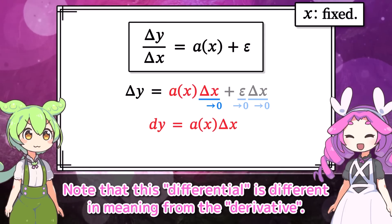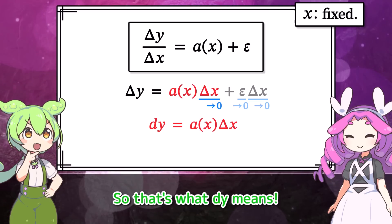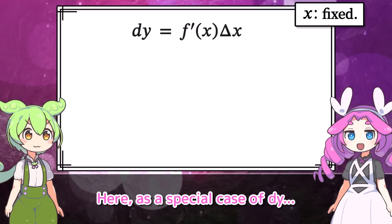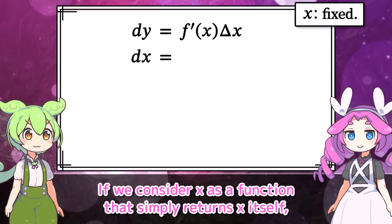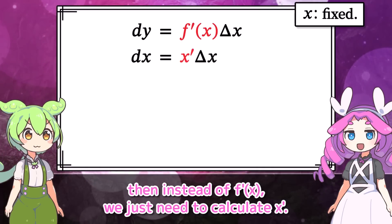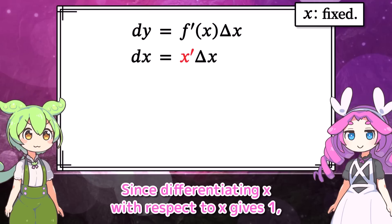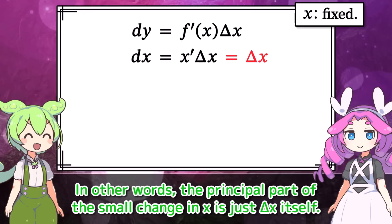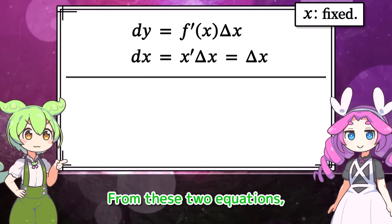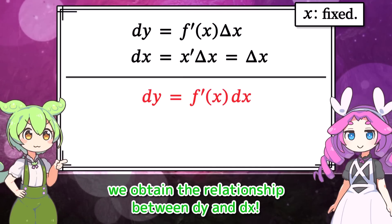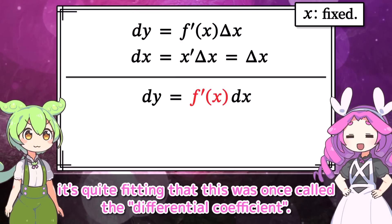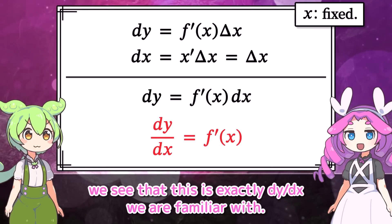Note that this differential is different in meaning from the derivative. The principal part of the small change — so that's what dy means. Since a of x turned out to be f prime of x, dy is ultimately expressed as f prime of x times delta x. As a special case, let's consider how dx is expressed. If we consider x as a function that simply returns x itself, then instead of f prime of x we just need to calculate x prime. Since differentiating x with respect to x gives 1, we conclude that dx equals delta x — the principal part of the small change in x is just delta x itself. From these two equations we obtain the relationship between dy and dx. What a beautiful formula. Since f prime of x acts as the coefficient when expressing the differential dy in terms of dx, it's quite fitting that this was once called the differential coefficient. If we divide both sides by dx, we see that this is exactly dy by dx.